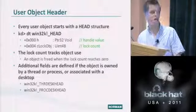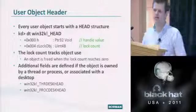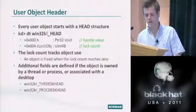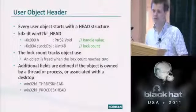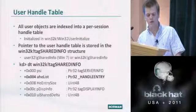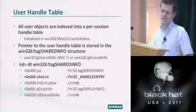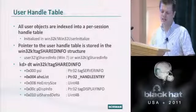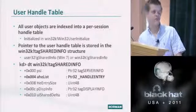All objects start with a common header known as the head structure, which holds the actual handle value and a reference count that tracks object use. This reference count mismanagement is one of the vulnerability classes. There are also additional fields if the object is owned by a thread or process. All user objects are indexed into a handle table defined per session — global for a user, not tied to a desktop. The pointer to this handle table is stored in a shared info structure accessible from user mode via the user32 DLL export GetSharedInfo.